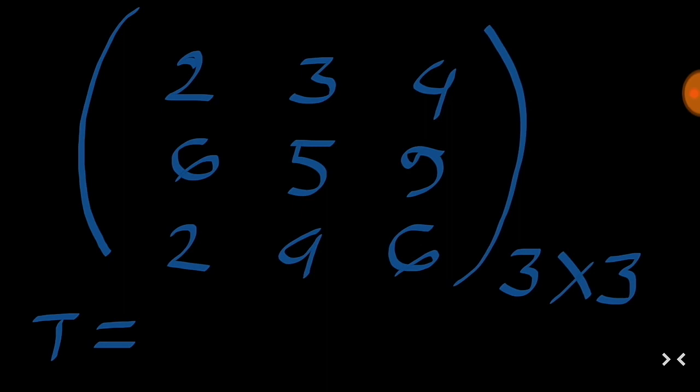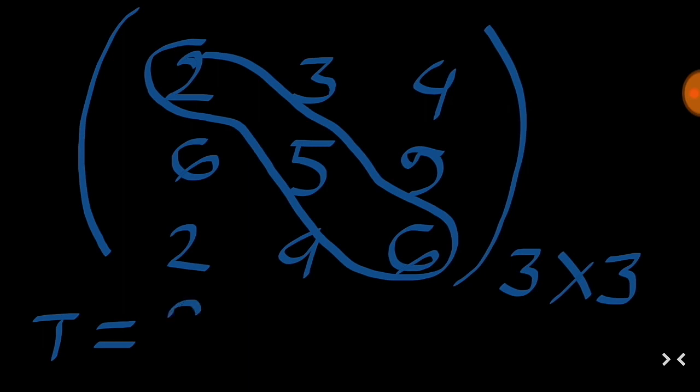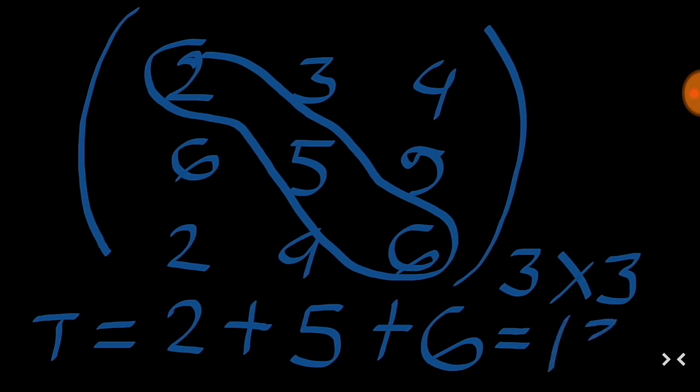Then the trace is the sum of the diagonal elements, that is 2 plus 5 plus 6. So 2 plus 5 plus 6, that will be equal to 13.